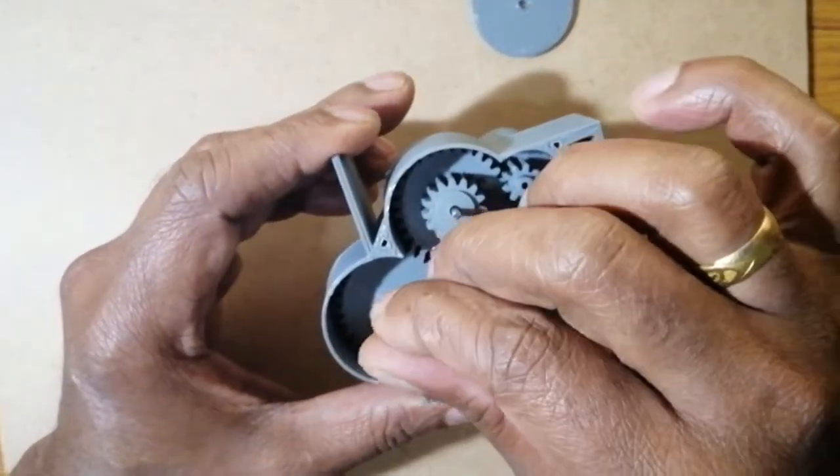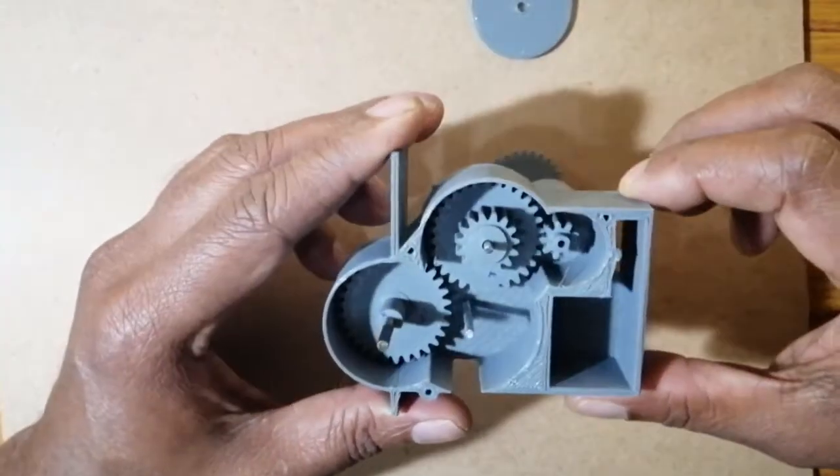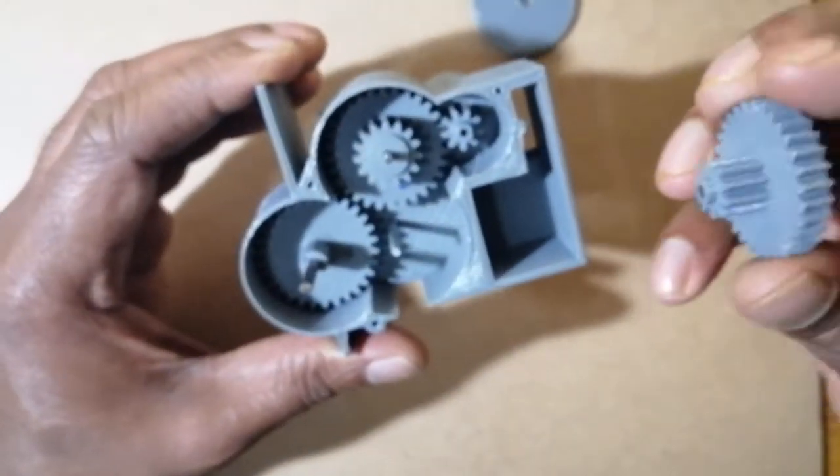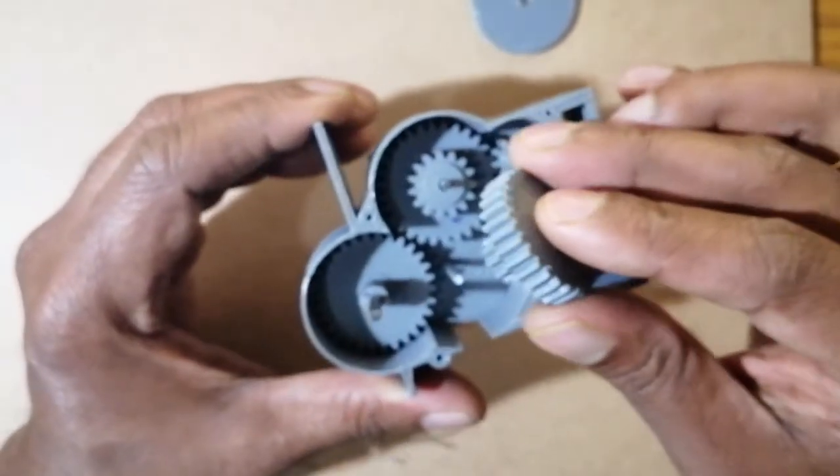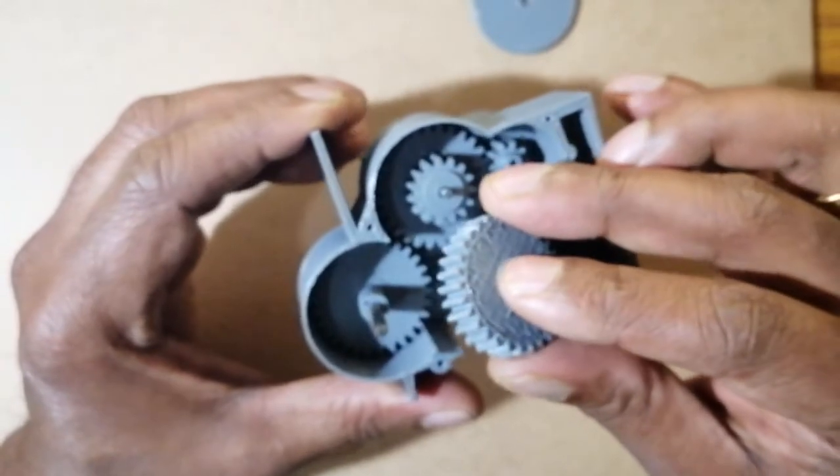So the drive shaft is placed. Now let's place the joining gear, that is the second gear, into position.